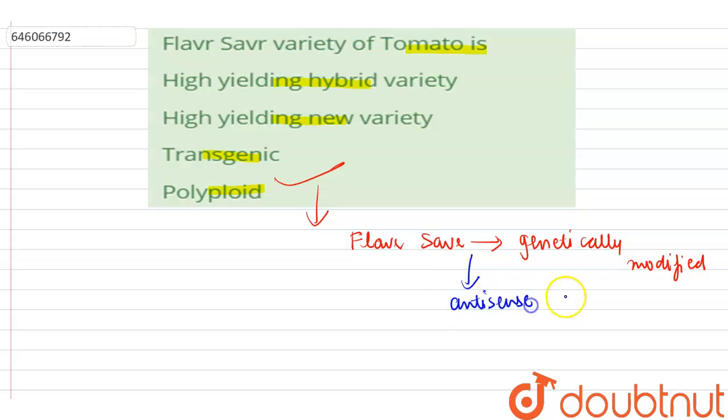The antisense gene interferes with the production of the enzyme polygalacturonase, which generally reduces the shelf life of tomato by increasing the ripening rate.